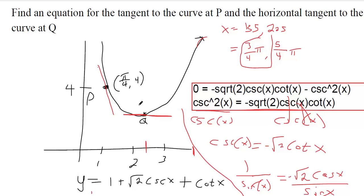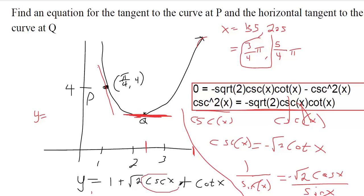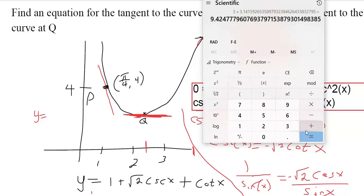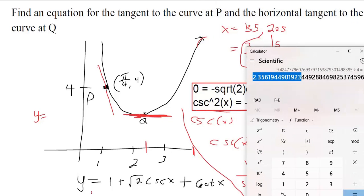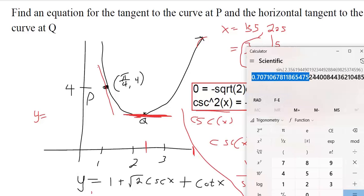We found that x equals 3π/4 is most likely Q, since Q is somewhere between 2 and 3 according to our textbook. If we want the equation of the horizontal line, a horizontal line is just y equals some constant, so we really want to know the y-coordinate. We can figure that out by plugging x equals 3π/4 back into the original equation. Cosecant is the reciprocal of sine, so I do one divided by sine of 3π/4 to get cosecant, then multiply by square root of two.